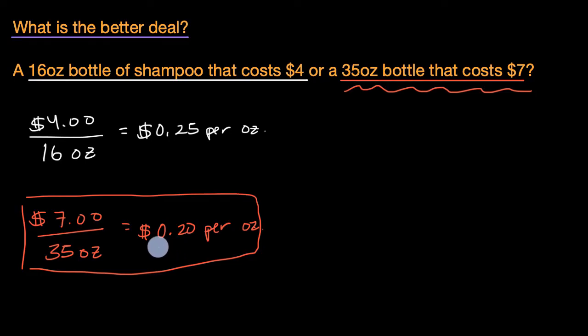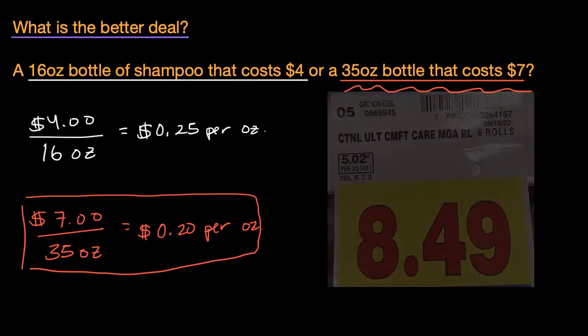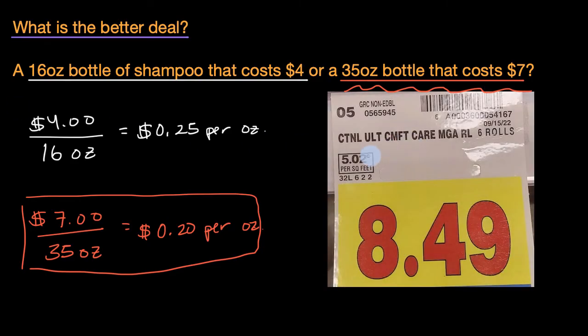Maybe you walk around with a calculator or it turns out in many stores, they do the unit pricing for you. So this is an example of a price that you might see at a store. And this looks like it's some kind of toilet paper or something. It's six rolls of ultra comfort care. And the price here is $8 and 49 cents, but they give us the unit pricing. It's right over here.